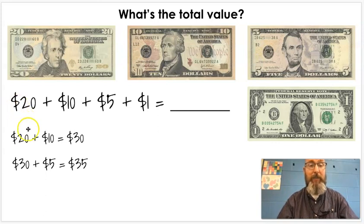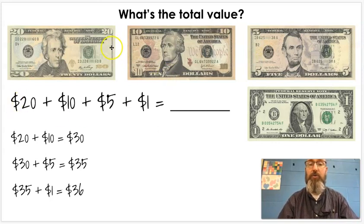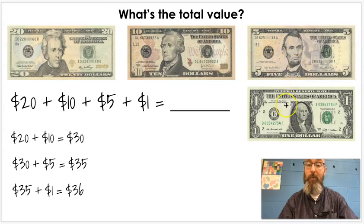So, we've added our twenty, we've added our ten, we've added our five. We need to add our one. So, we're going to add $35 + $1. And we just have to count up one more. Thirty-five plus one, we know is thirty-six. So, the total value of all of these bills, the twenty-dollar bill, the ten-dollar bill, the five-dollar bill, and the one-dollar bill is thirty-six dollars.